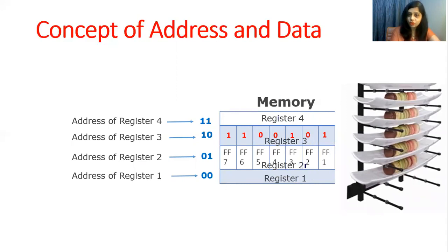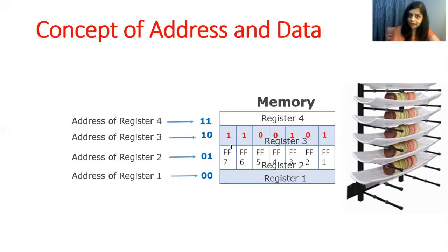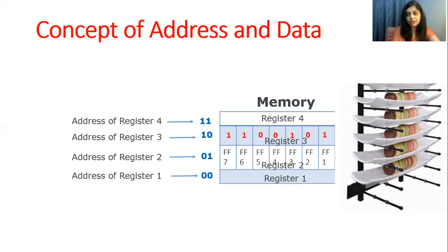Memory is supposed to consist of registers — for example, register 1, register 2, register 3, and register 4. We can store 8 bits in one register, and it is a combination of 8 zeros and ones. Each register has an address, and what is stored inside is the data. This is the concept of address and data, and this is the structure of a register.